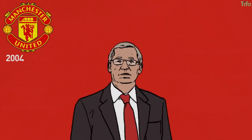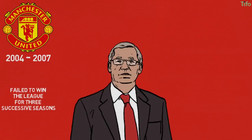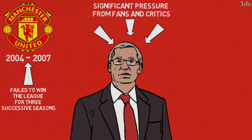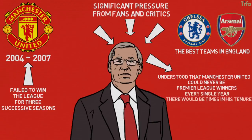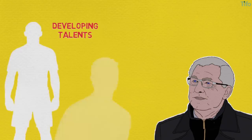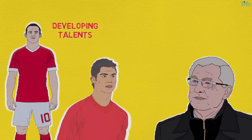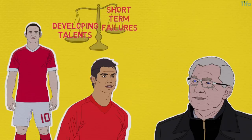An example of this is Sir Alex Ferguson and Manchester United from 2004 to 2007. United failed to win the league for three successive seasons during that time period, and Ferguson was facing significant pressure from fans and critics who saw Chelsea and Arsenal as the best teams in England. However, Ferguson understood that Manchester United could never be Premier League winners every single year, and that there would be times in his tenure that his squad would be inferior to that of other teams. Rather than trying to immediately sign big-name players to react to his competition, Ferguson understood that developing talents like Wayne Rooney and Cristiano Ronaldo would outweigh Manchester United's short-term failures.